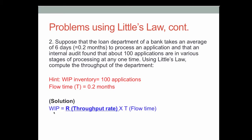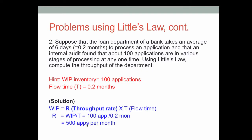WIP equals throughput rate R times flow time t. Since the question is asking for the throughput rate, we can rearrange the formula: R equals WIP divided by t. So 100 applications divided by 0.2 months equals 500 applications per month, which is the answer to this problem.